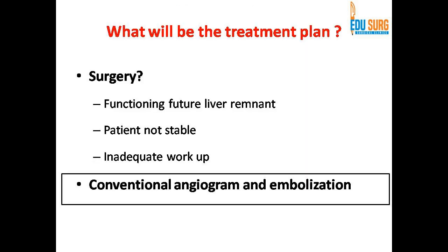Now, what can be the plan? If we want to do surgery, we would have to assess the future liver remnant, but the patient was not stable for this. From a malignancy point of view, upper GI endoscopy is required and we have to assess the hepatitis C status — the patient is not ready for all this when the first presentation is with rupture. The other option is conventional angiogram and embolization. Data is very clear that bland embolization to begin with is the safest in this setting, and that is what we did.